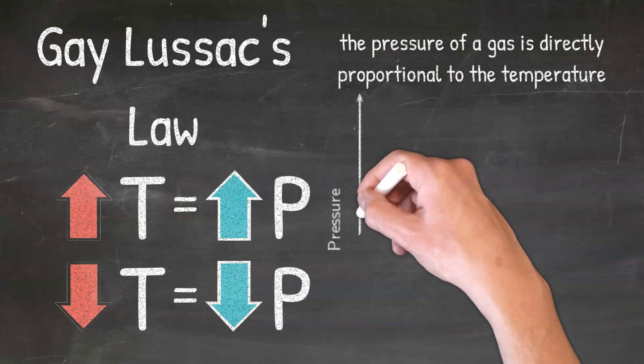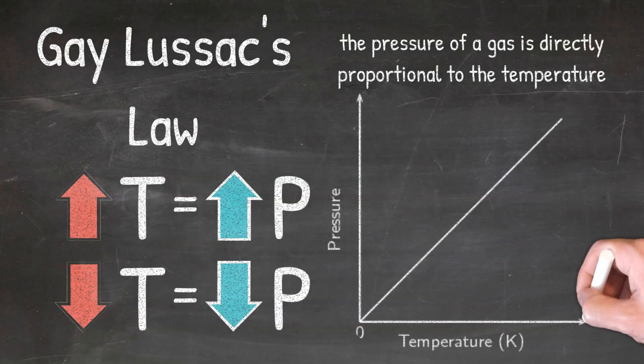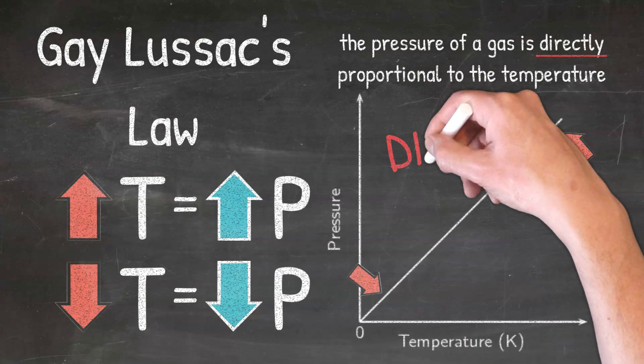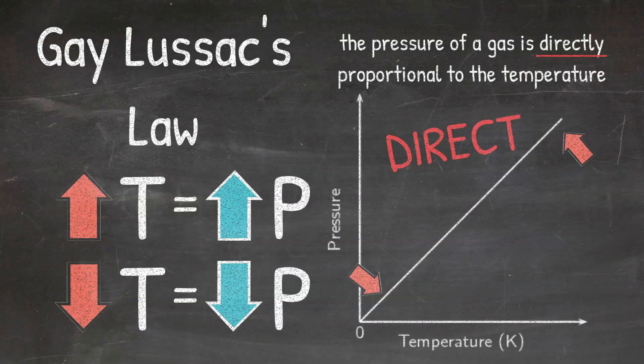We can represent Gay-Lussac's Law using a graph where we graph temperature and pressure. As you can see here, this graph has a positive slope, which helps to show the direct relationship between the temperature and pressure of a gas. When the temperature is high, the pressure is also high, and when the temperature is low, the pressure is also low. This helps to show the direct relationship of temperature and pressure of a gas at constant volume.